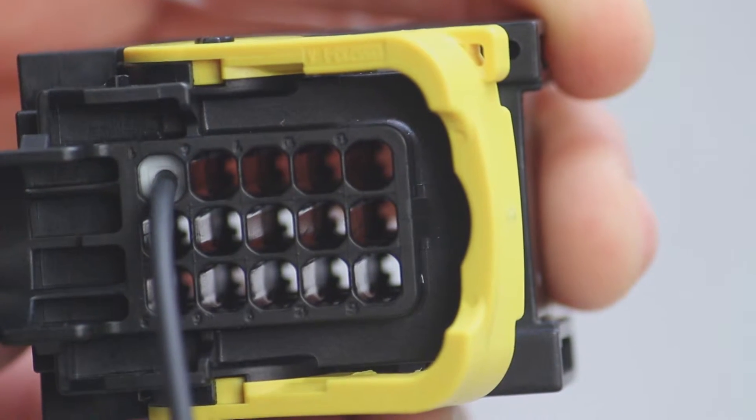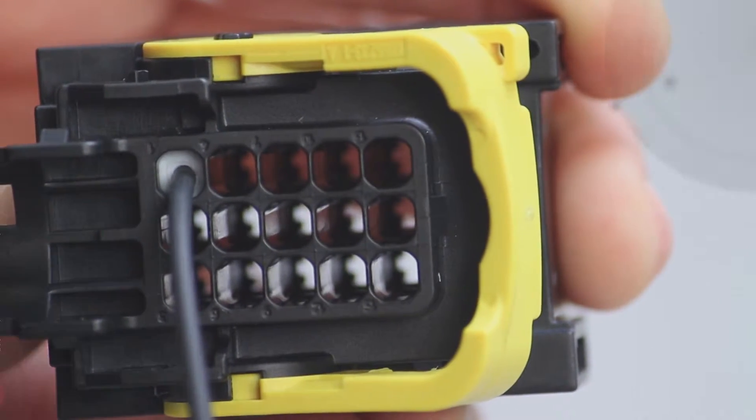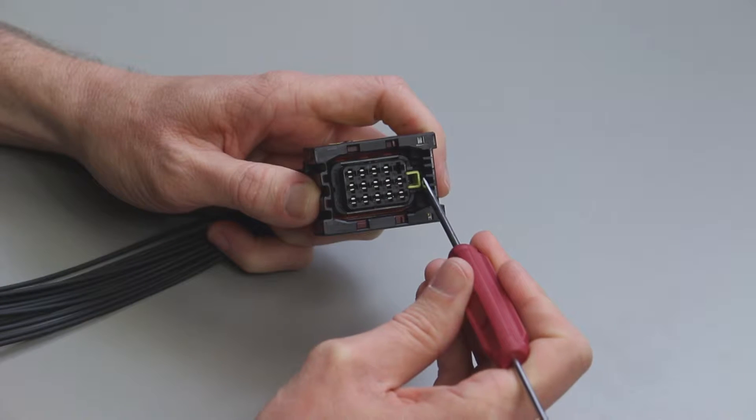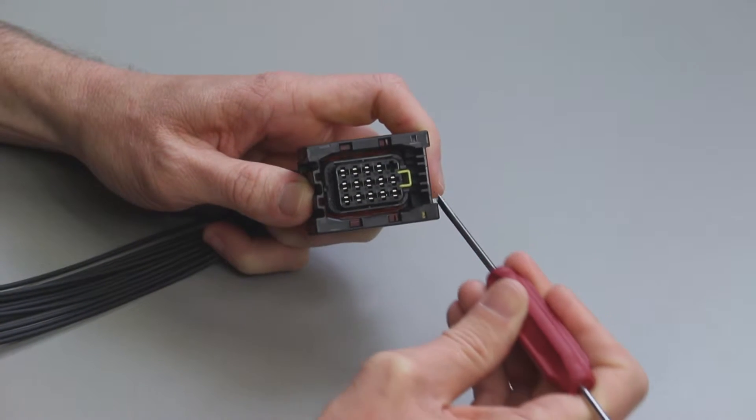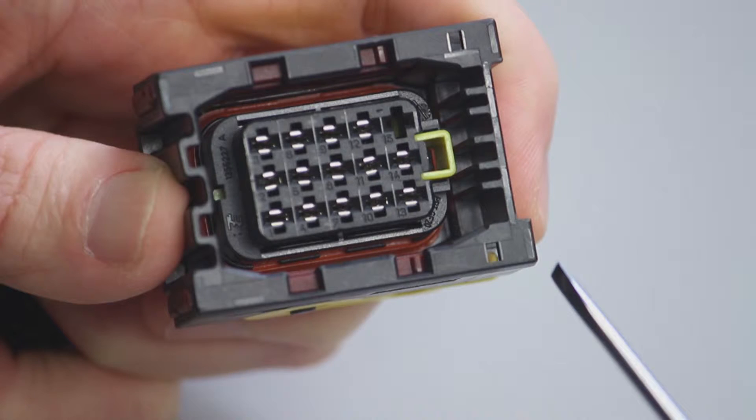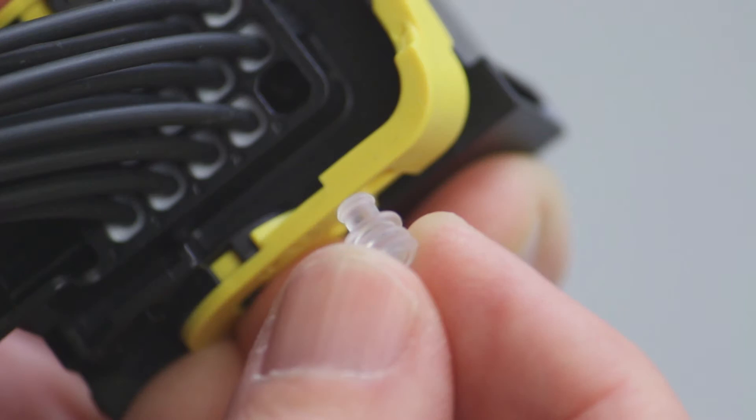Repeat this process until all of the cavities are filled. After all the contacts have been inserted, slide the integrated secondary lock into the locked position with the DT-RT1 removal tool or a screwdriver.